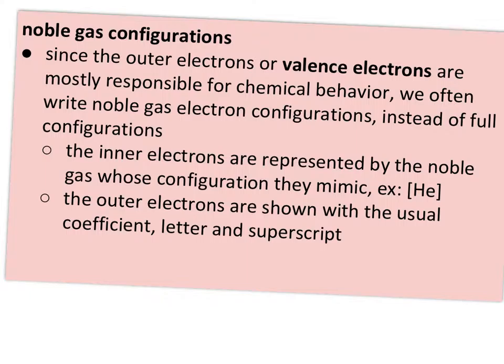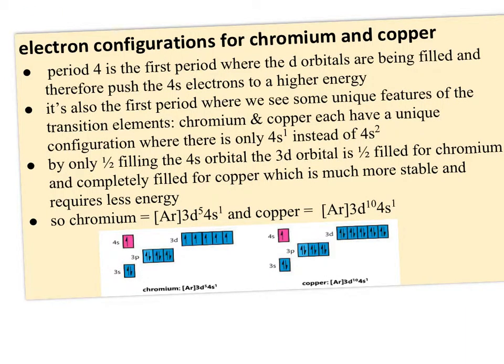Noble gas configurations, you might remember then, represent just the outer electrons or valence electrons, since valence electrons are mostly responsible for chemical behavior. So we don't usually need the full configuration. We can just represent the inner electrons by the noble gas, whose configuration they mimic. So you put it in brackets along with the name of the noble gas. And then the outer electrons are shown with the usual coefficient, letter, and superscript.